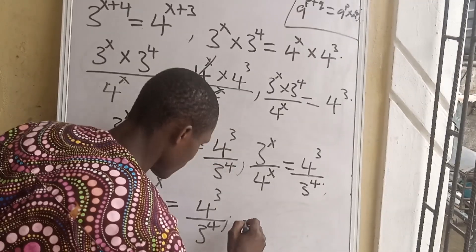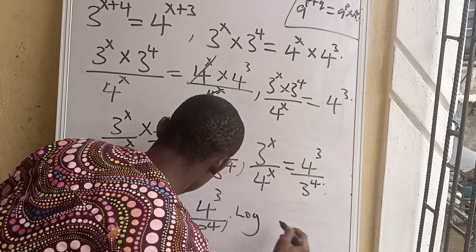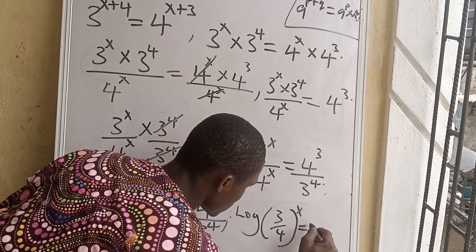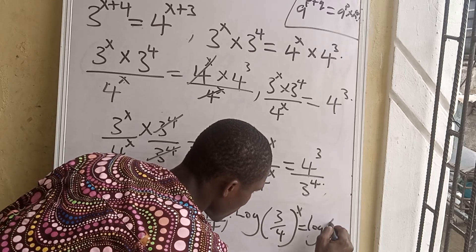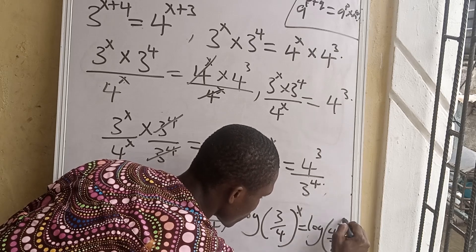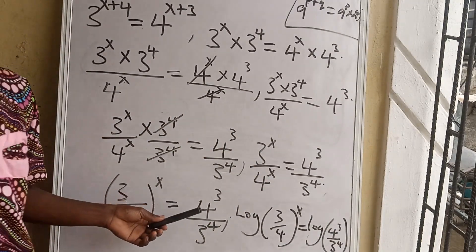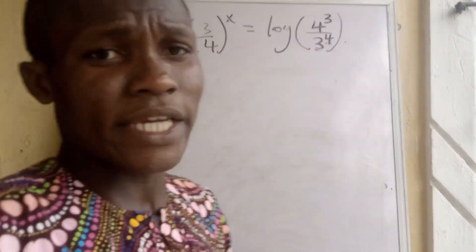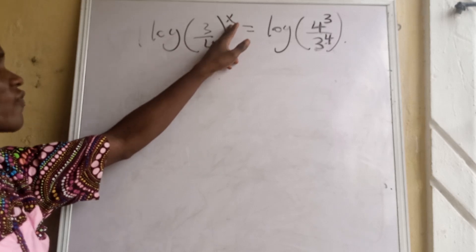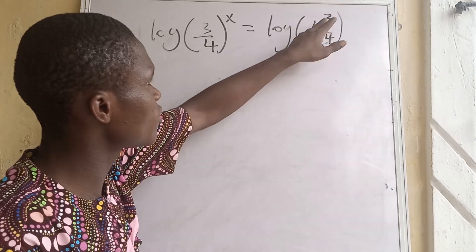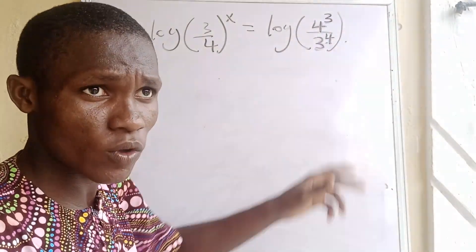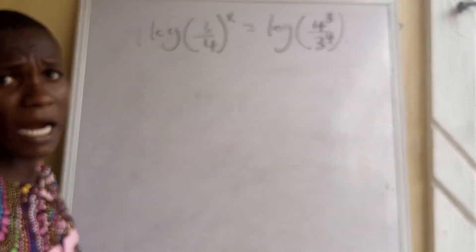Taking the log of both sides, we write: log of (3/4)^x equals log of (4^3 over 3^4). We then apply the power rule of logarithms, which brings the exponent x to the front: x times log(3/4) equals log(4^3 over 3^4).